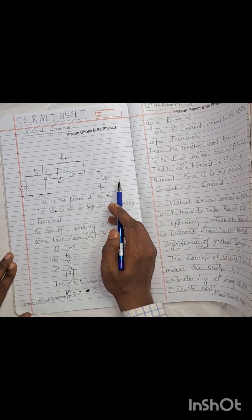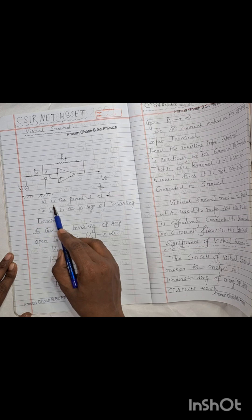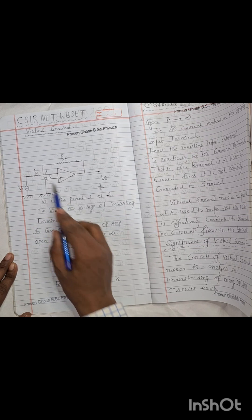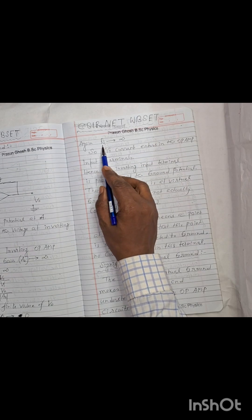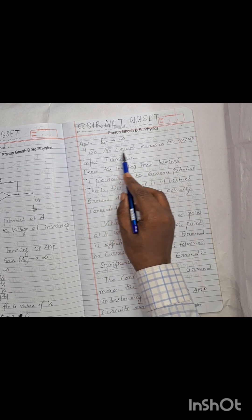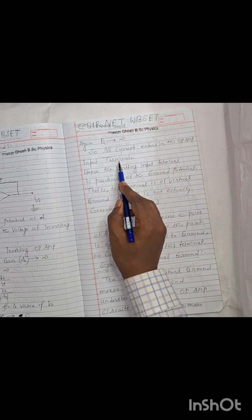This is the diagram for virtual ground. Vi is the potential at A, and in case of virtual ground we know that the open loop gain is infinite. So we can write that Vi equals 0, and input impedance is infinite. So no current flows in that input terminal.